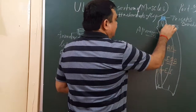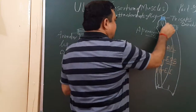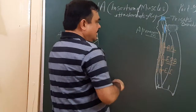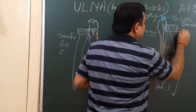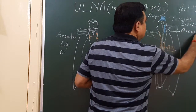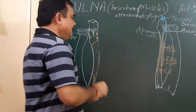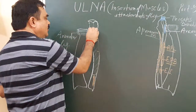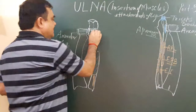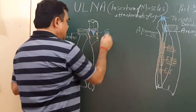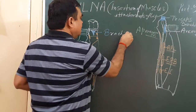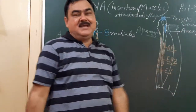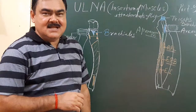Another muscle is also inserted here. That is the anconeus. Another muscle is attached on the coronoid process and ulnar tuberosity. This muscle is brachialis. So brachialis, anconeus, and triceps brachii — these are three muscles which are attached on the ulna.